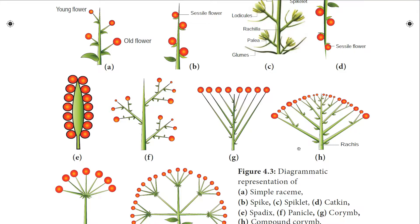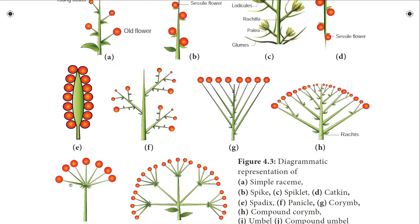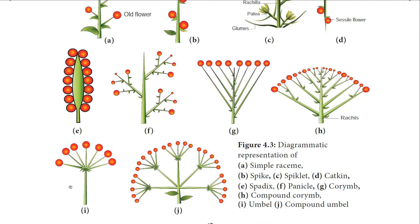The branched corymb is called compound corymb. Example: Cauliflower. The next type of inflorescence is umbel, where pedicellate flowers arise from a common point — not from different points — at the apex of the peduncle. Example: Allium cepa. Compound umbel is a branched umbel, and each smaller unit is called an umbellet. Example: Daucus carota and Coriandrum sativum — carrot and coriander.